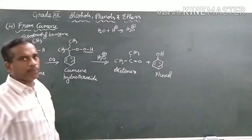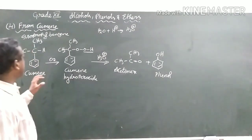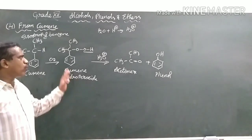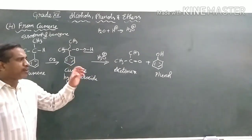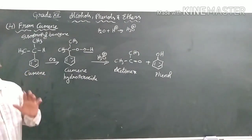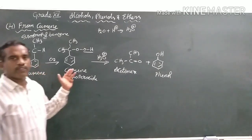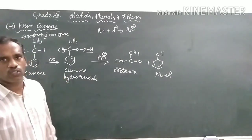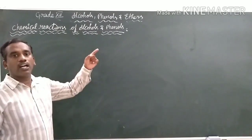This is the industrial preparation of phenol — you can get a large amount of phenol this way. The key point is: react cumene under oxidation to form cumene hydroperoxide, then acidic medium hydrolysis gives acetone and phenol. This is very important for board examinations. After discussing the preparations of phenol from chlorobenzene, benzene sulphonic acid, primary aromatic amine, and cumene, let us now continue with the chemical reactions of alcohols and phenols.